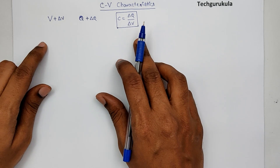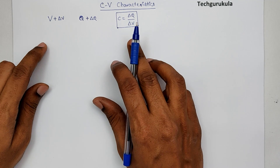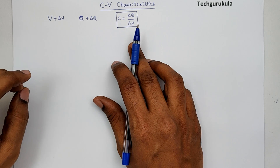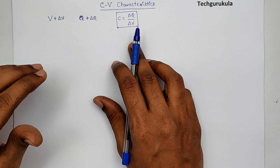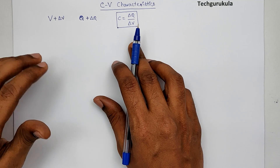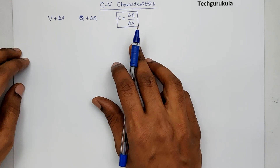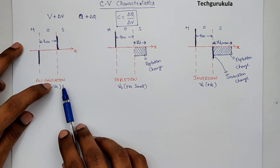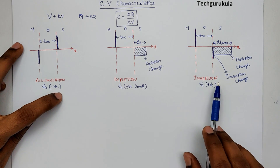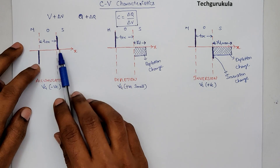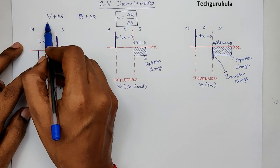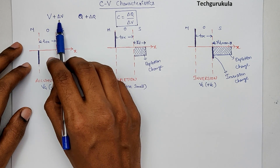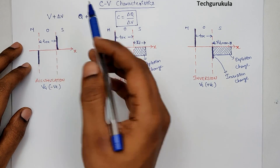To understand this concept better, I'm going to take the charge distributions from the previous sections — the accumulation mode, depletion mode, and inversion mode — to see the capacitance values or characteristics in those modes of operation. This is how the volume charge density distribution looks in accumulation, depletion, and inversion modes. I have shown the charge distribution for a constant DC voltage applied. Now, when we give a delta V increase in the potential, what would happen?